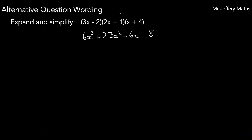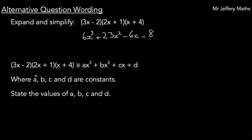In the final part of the video before the practice questions, we're going to look at a question which is worded slightly differently. We have the first example from this video with its answer underneath. The question below uses the identity symbol — meaning 'identical to' — and states that the expression is identical to ax cubed plus bx squared plus cx plus d, where a, b, c, and d are constants, and we're asked to state their values.